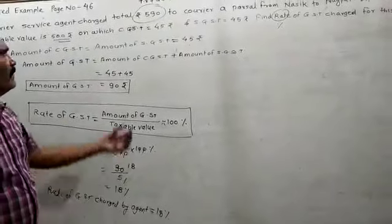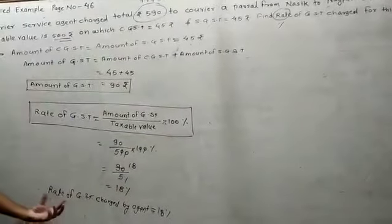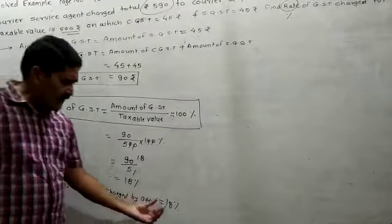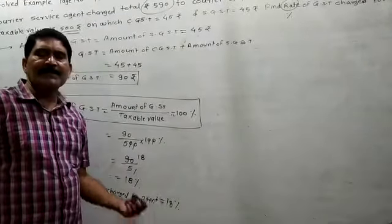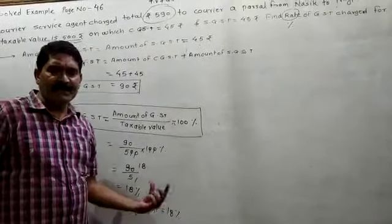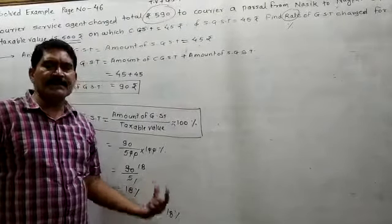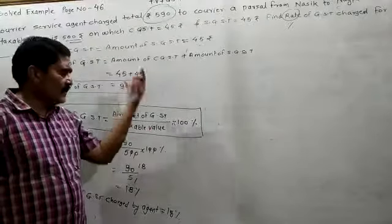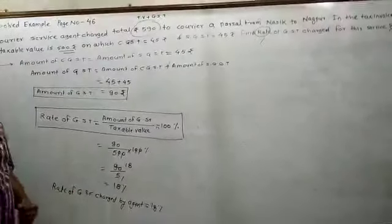If anyone asks for the rate of CGST and SGST separately, divide 18 by 2, which gives 9% CGST and 9% SGST. However, the problem does not ask for that, so the final answer is 18% GST.